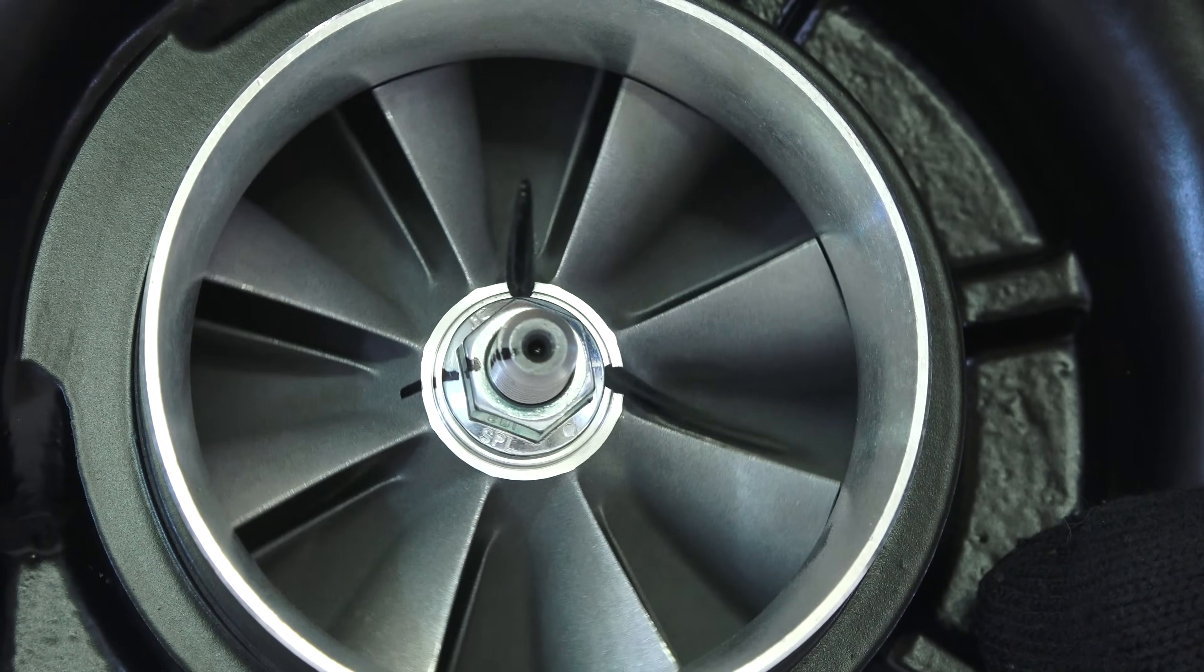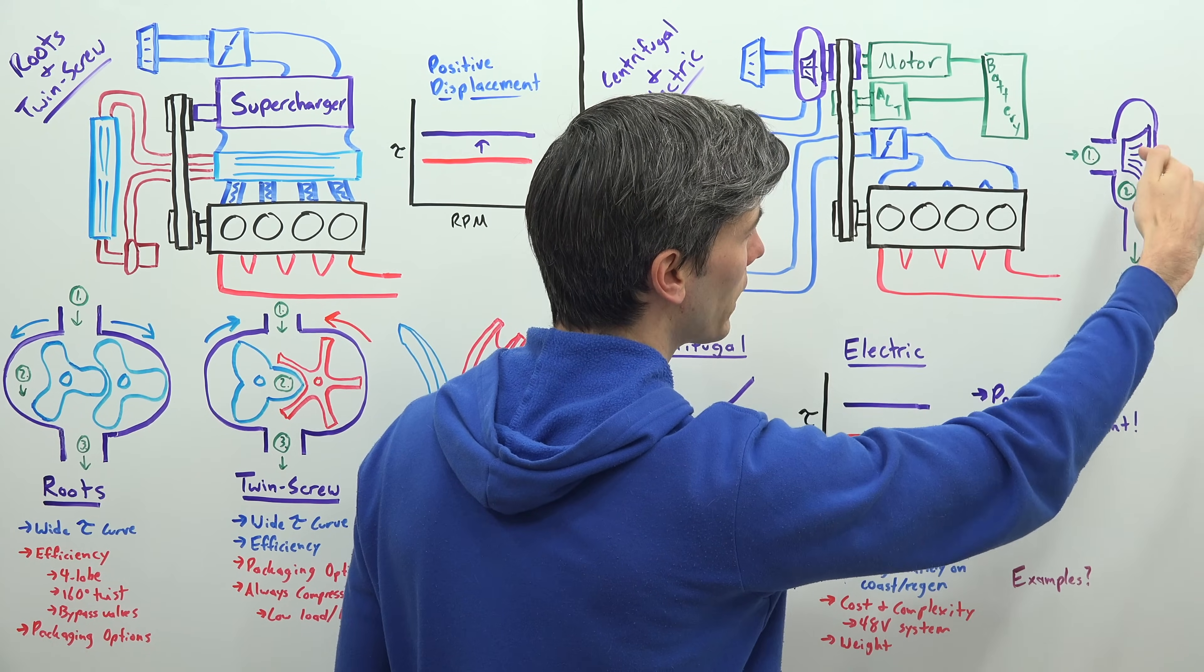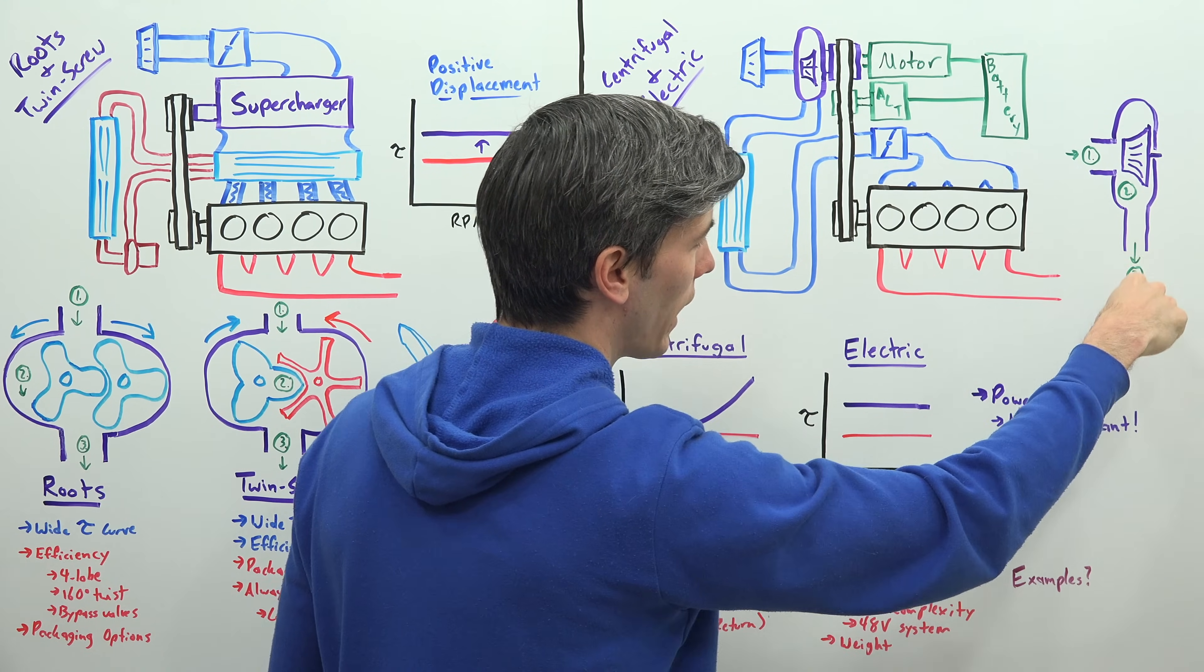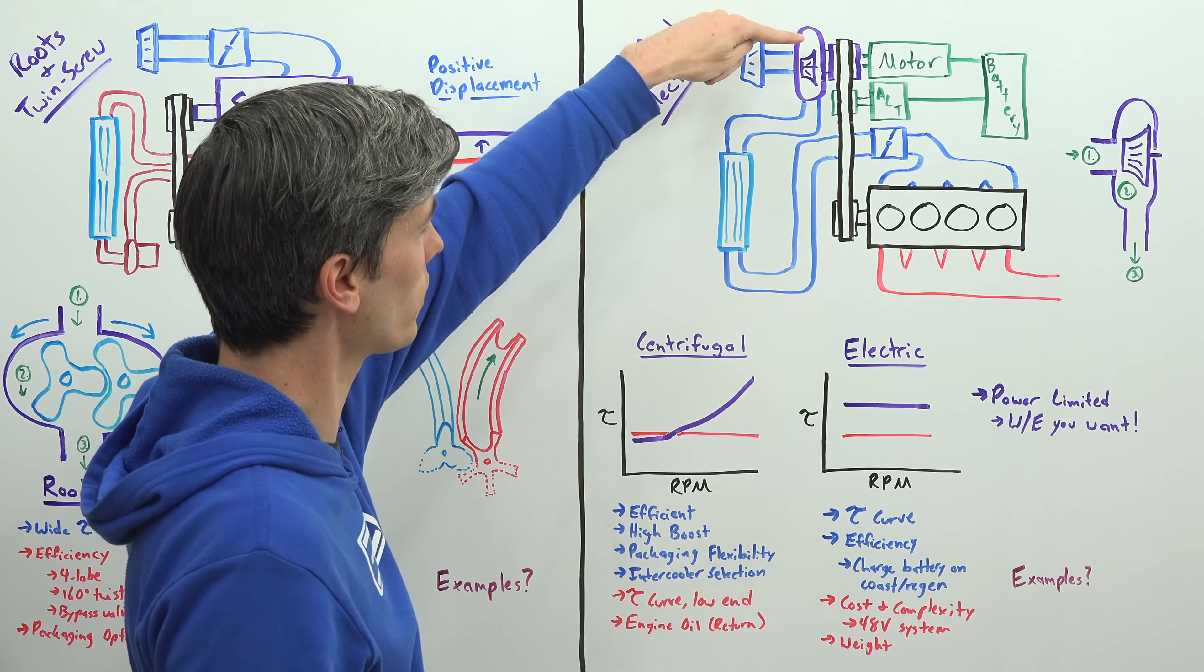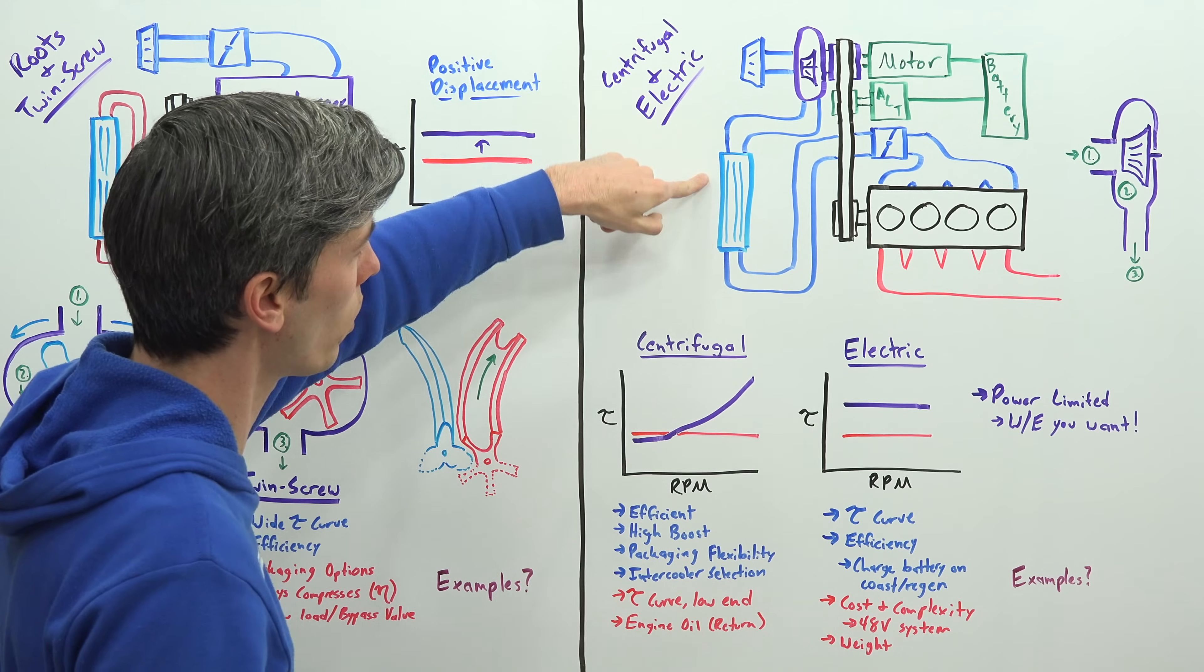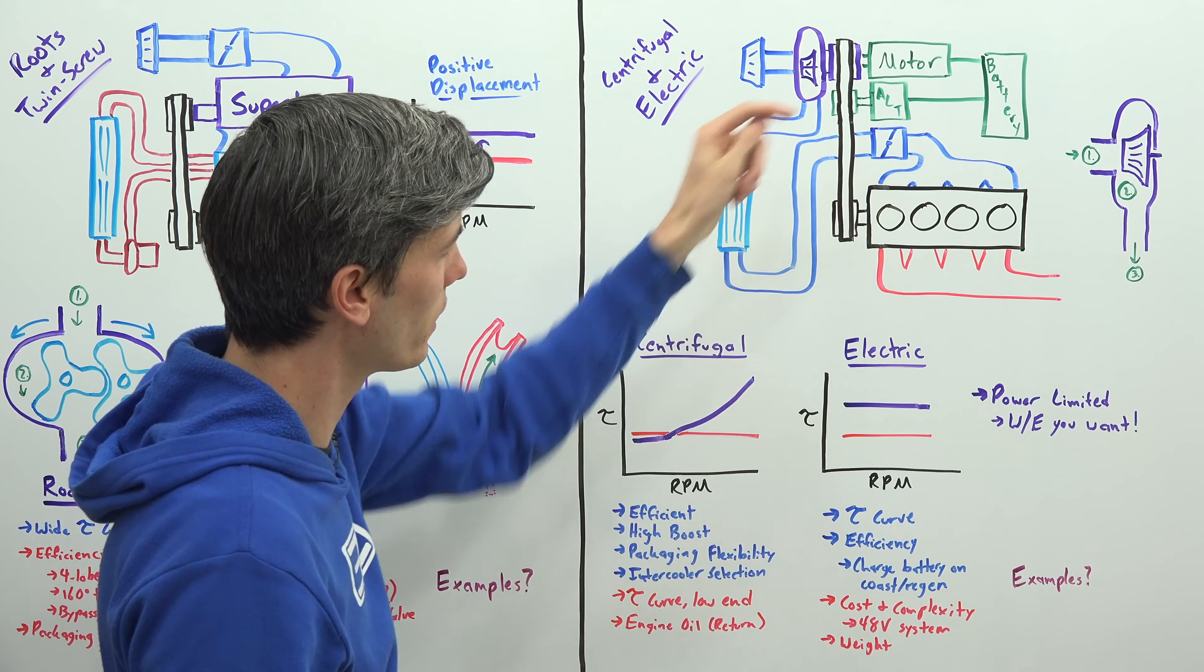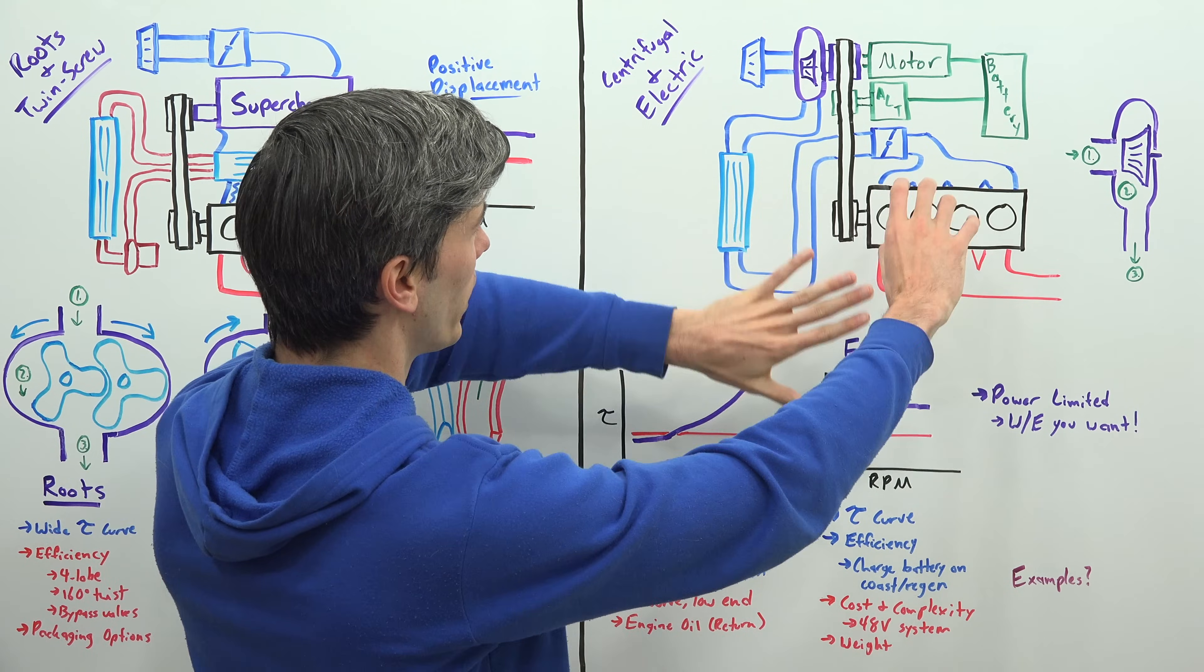Spinning up that impeller, pulling in the air, throwing that air to the sides of this housing, and then eventually it exits through and heads over to the engine. So the air comes in through the intake, travels through that compressor, through an intercooler - could be air to water or air to air - sent up front through the throttle body into the engine and then out the exhaust.